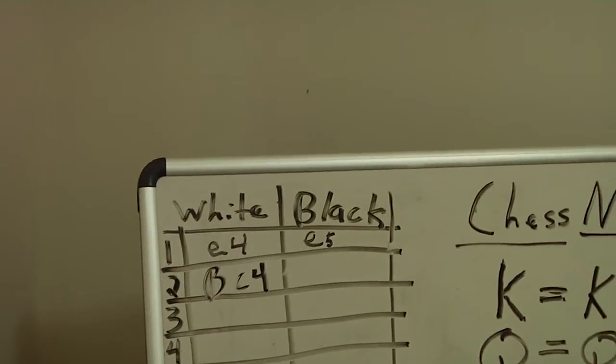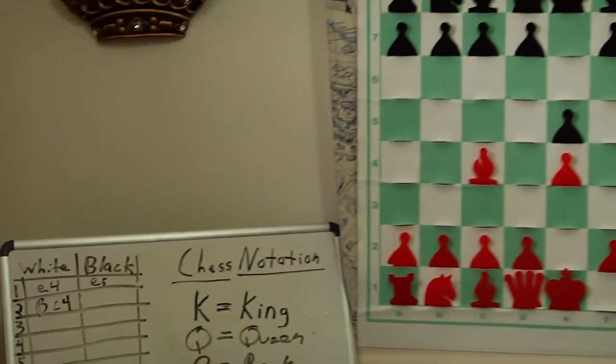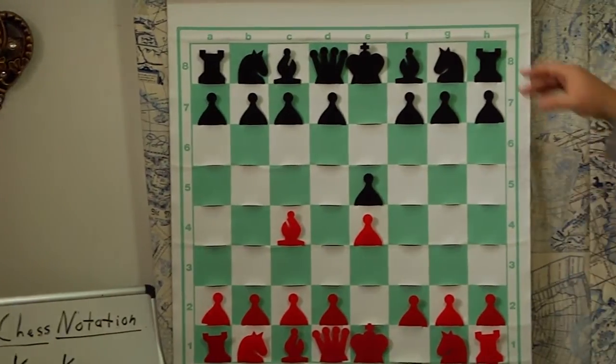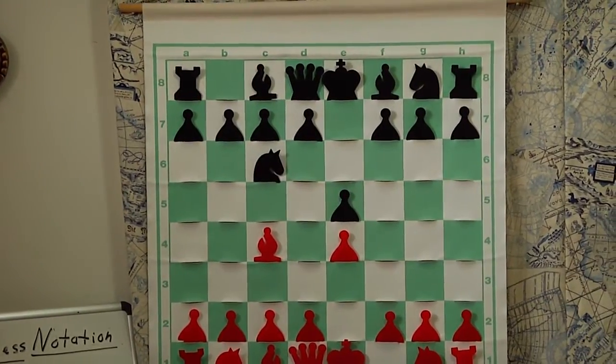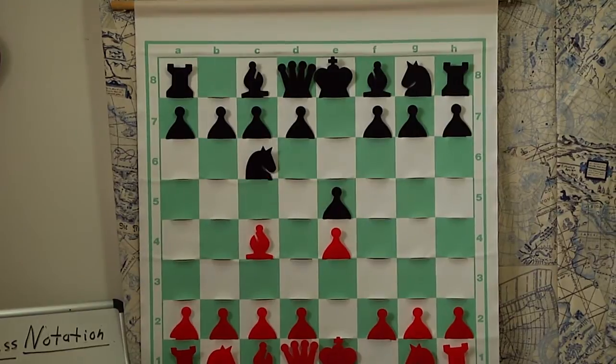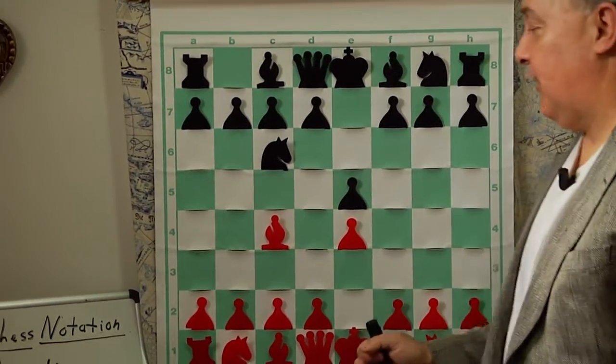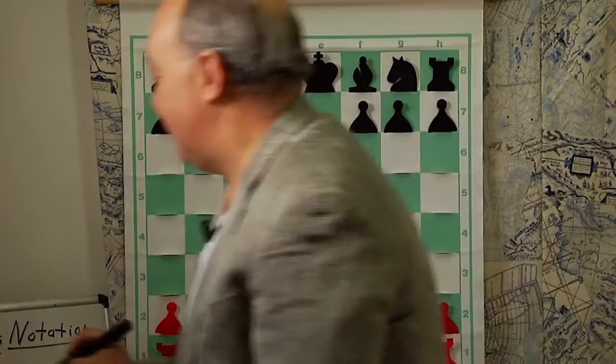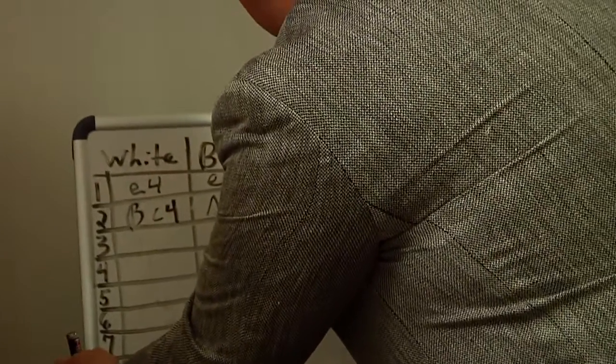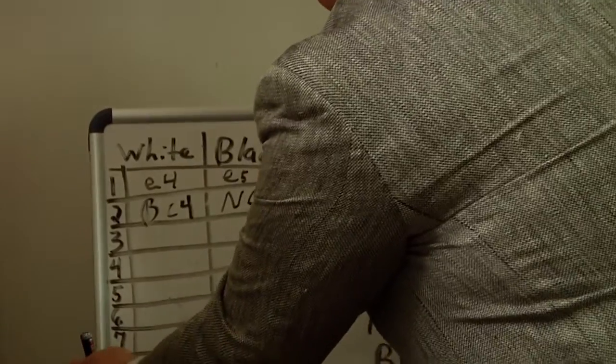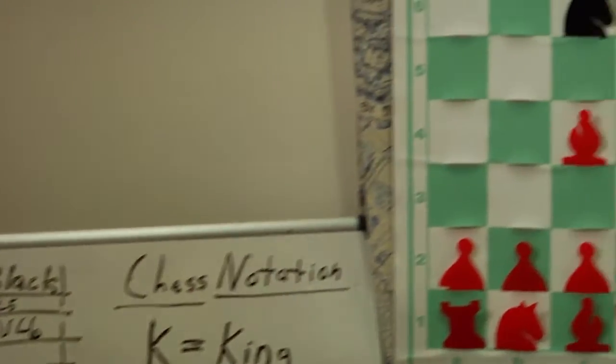All right, black will answer over here on the demo board with Nc6. The knight moves to c6. Okay, and again, the letter we use for the knight is the n, Nc6. Pardon my penmanship.